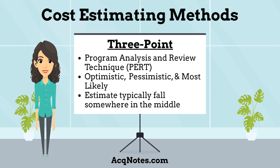The final cost estimating method is the three-point cost estimate. It is based upon the program analysis and review technique, called PERT, which has the project manager identify three separate estimates. One estimate is optimistic, the other is pessimistic, and the last is most likely. This scenario has the cost estimate typically fall somewhere in the middle.